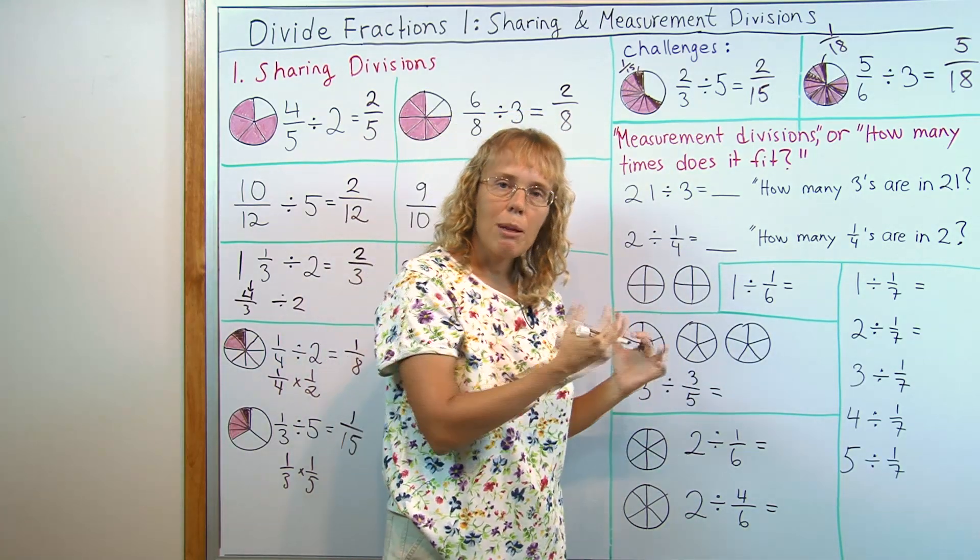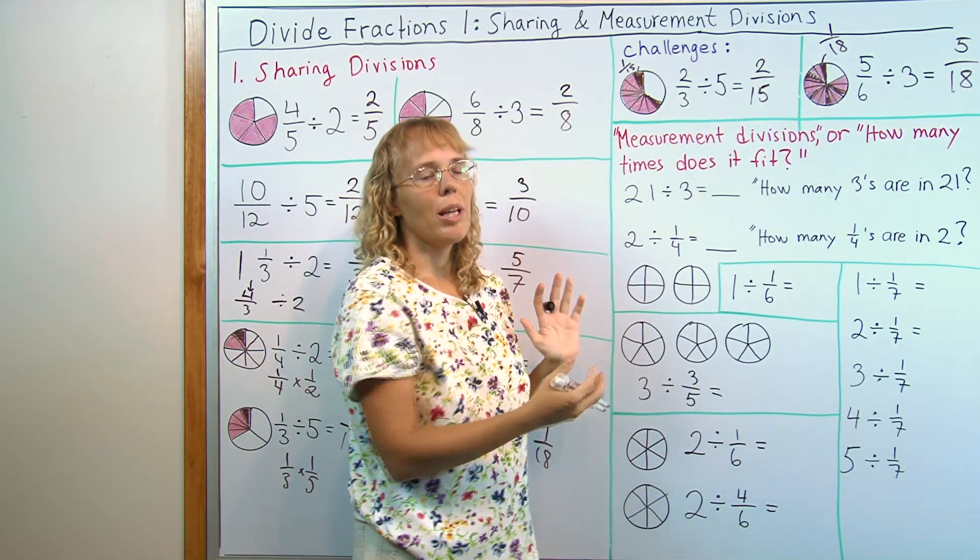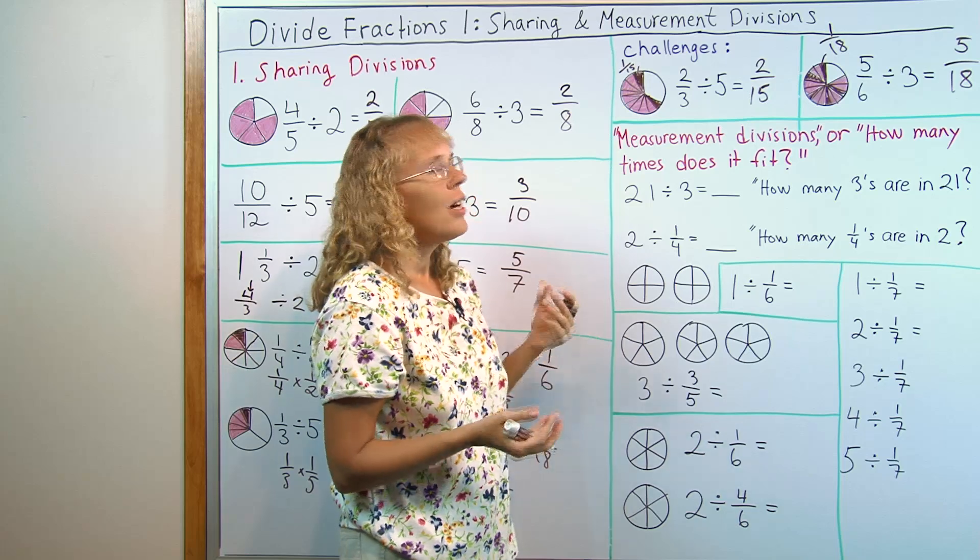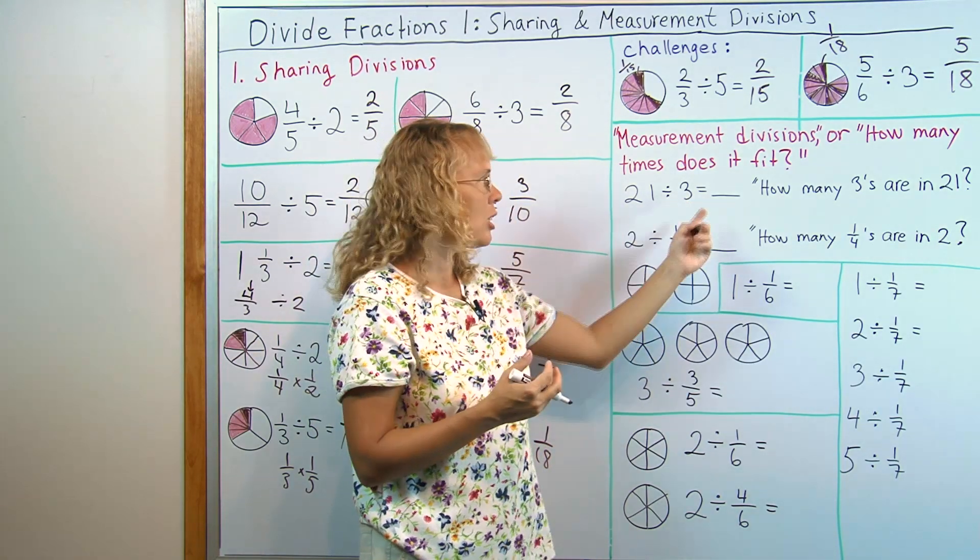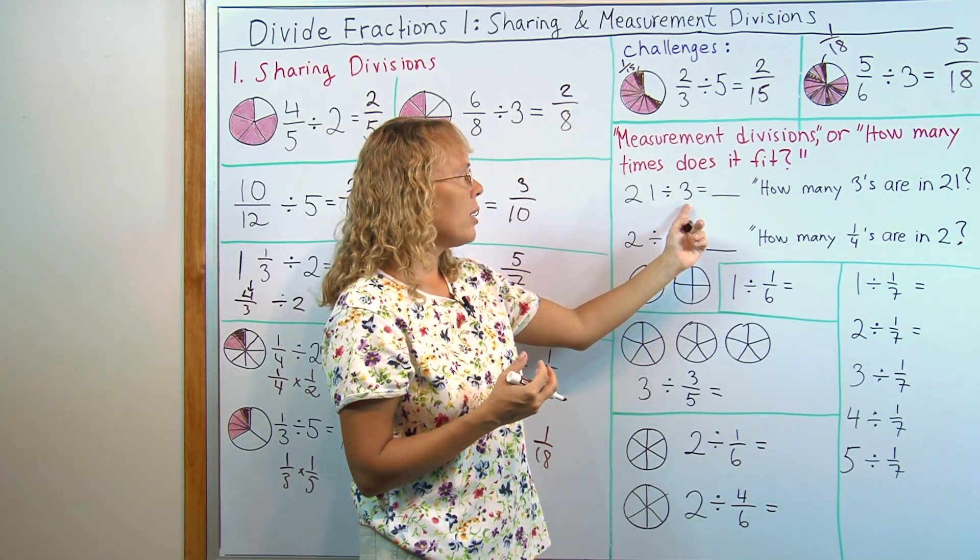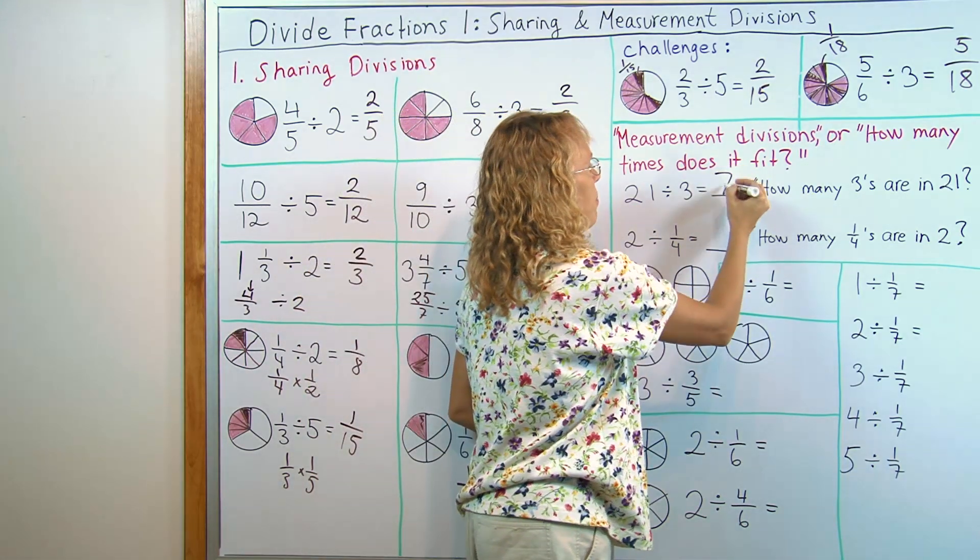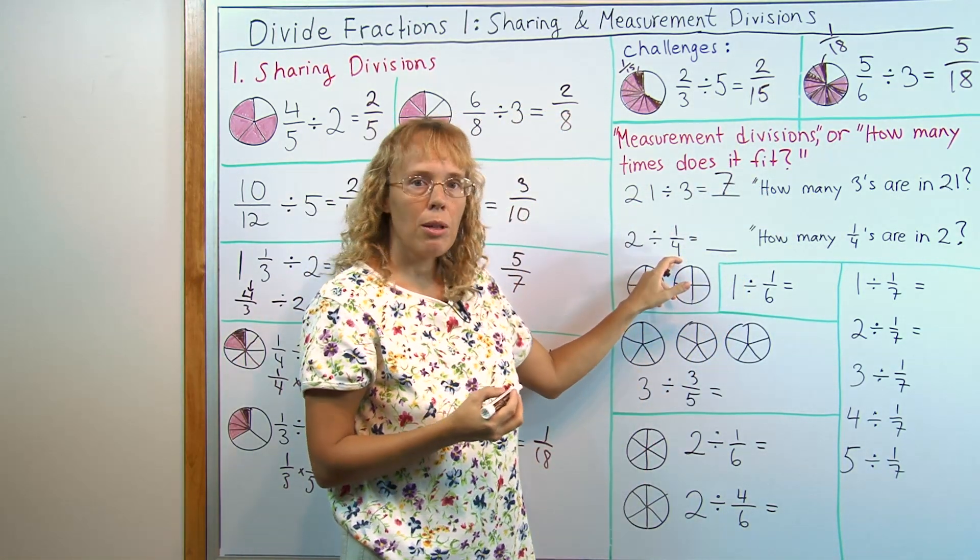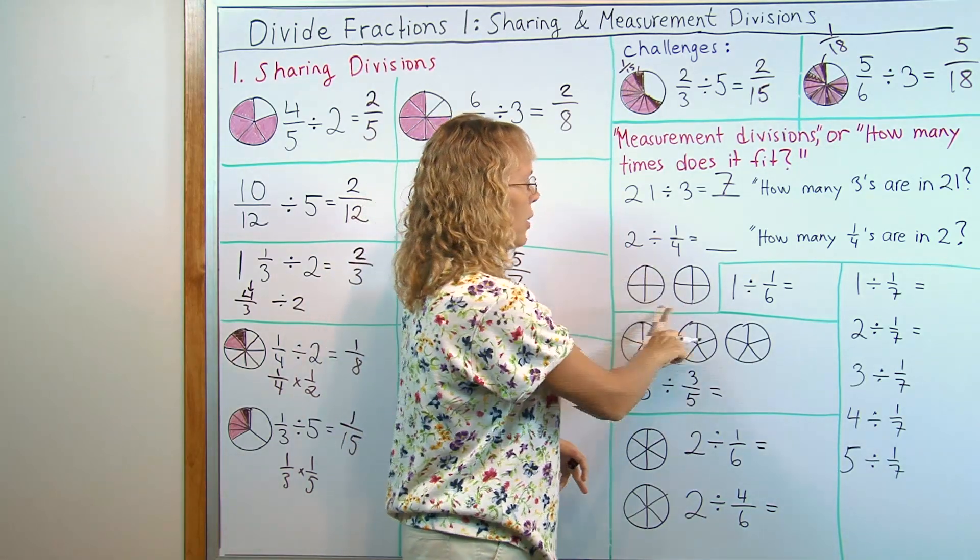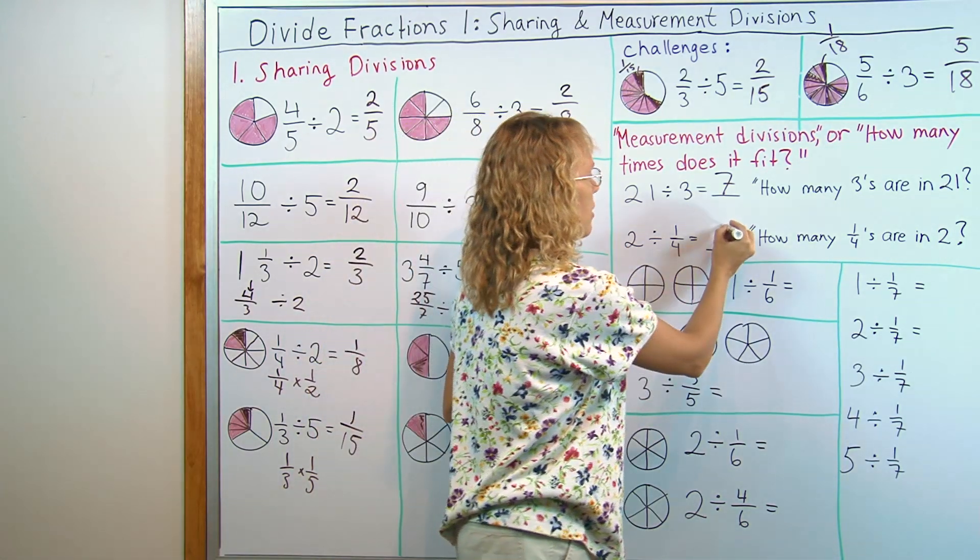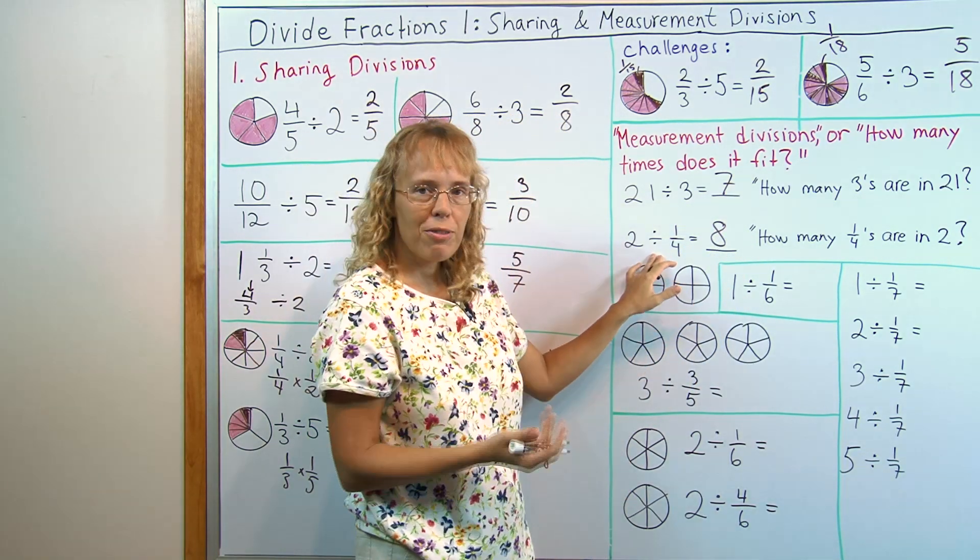And now, the second type of division you can do, logically thinking, is measurement division. What it means is that we think, how many times does the divisor fit into the dividend? Or how many times does it go into the dividend? How many of these are in the dividend? How many threes are in twenty-one? Seven. And here, in this division, how many one-fourths? How many fourths are in two? These two pies. How many fourths are in it? The answer is eight. Simply eight. Two divided by one-fourth equals eight.